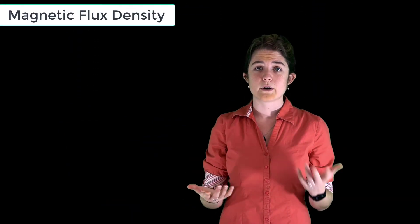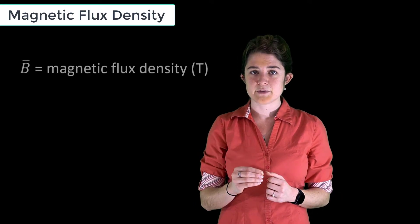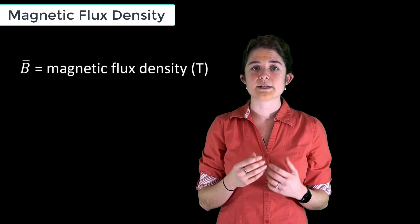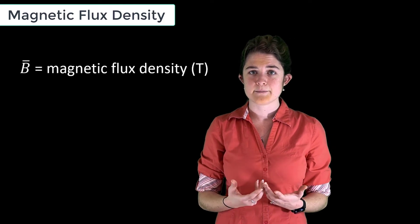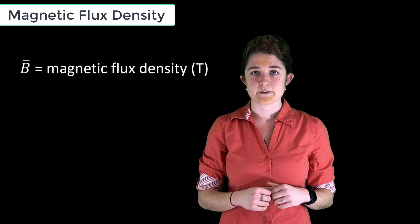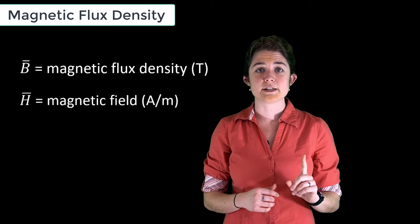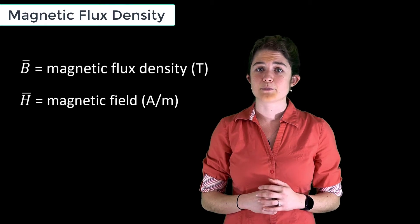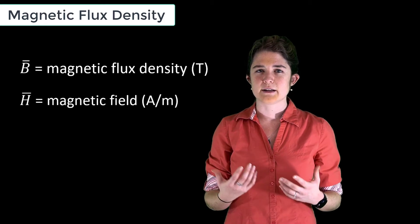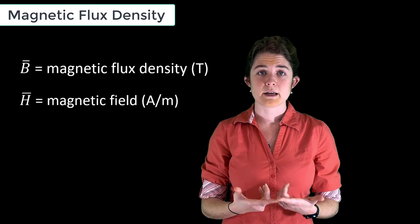Like with electricity, where we could use either D or E to talk about the field, we have two ways to express the magnetic field. The first is B, the magnetic flux density, which has units of Tesla. This is considered the most fundamental expression of the magnetic field. We also have H, the magnetic field, which has units of amperes per meter. The H field is related to the B field by the magnetic response of the material in which the fields exist.